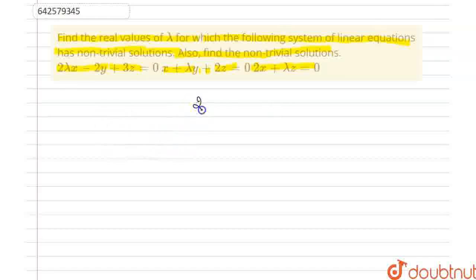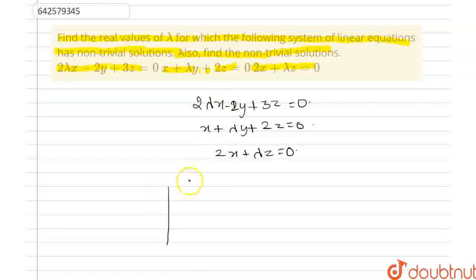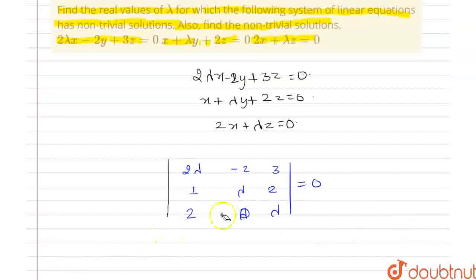We have three equations: 2λx − 2y + 3z = 0, x + λy + 2z = 0, and 2x + λz = 0. Since we need non-trivial solutions, that means the determinant is equal to 0. So we set up the determinant with rows [2λ, −2, 3], [1, λ, 2], and [2, 0, λ], and equate it to 0.